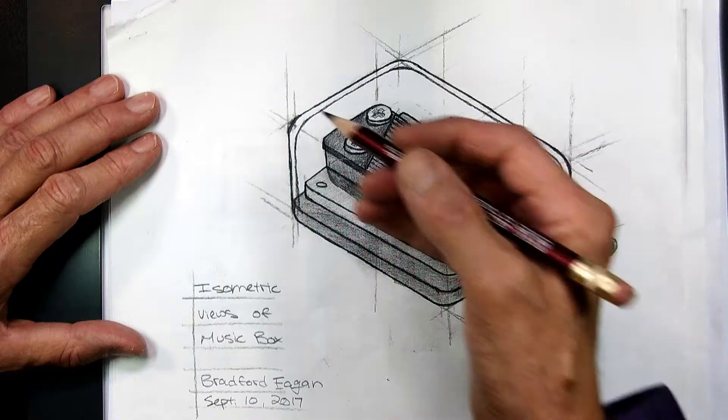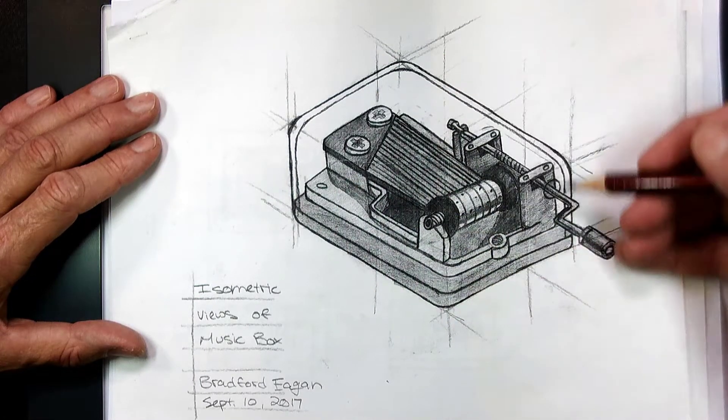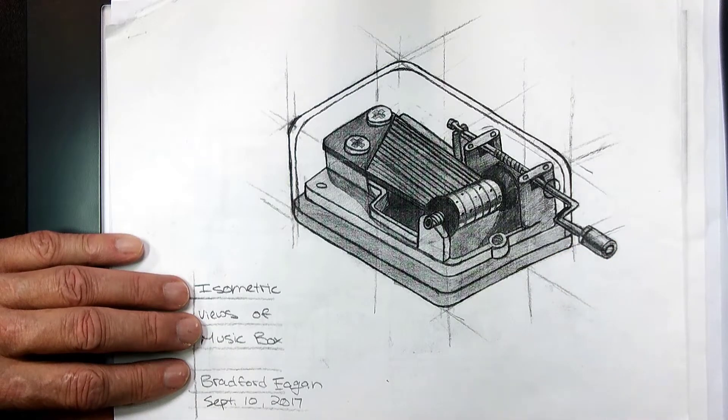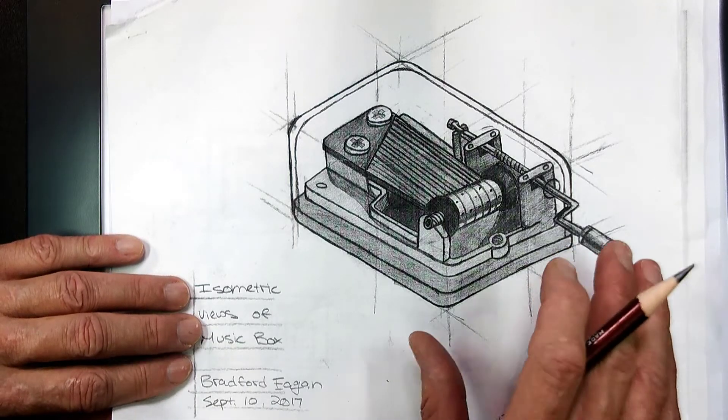Here is an isometric view of the same music box. And you can see the light construction lines. And you can see his method for constructing and conveying visually this music box.